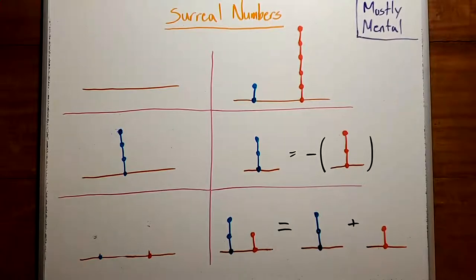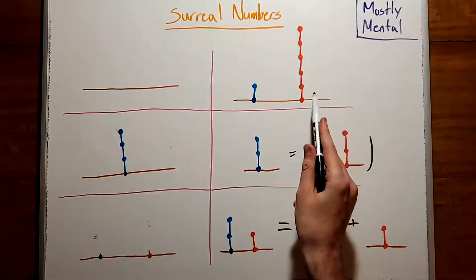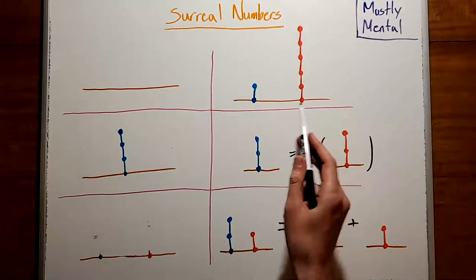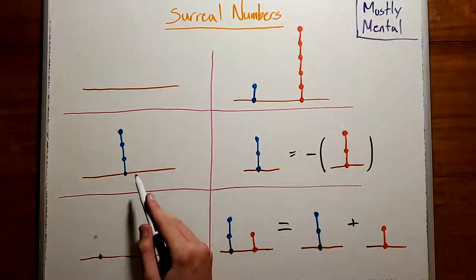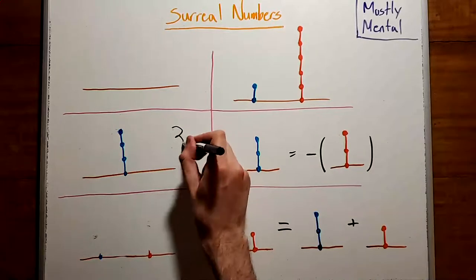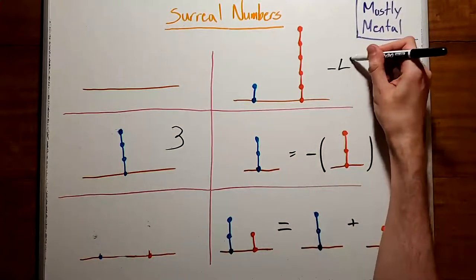So having more edges is an advantage. We'll call the size of that advantage the value of the position. And to avoid having to say blue has an advantage of 3 or red has an advantage of 4, we'll say the value of a position is positive if blue can guarantee the win, and negative if red can, and 0 if whoever goes first loses. So this position has a value of 3, and this one has a value of negative 4.